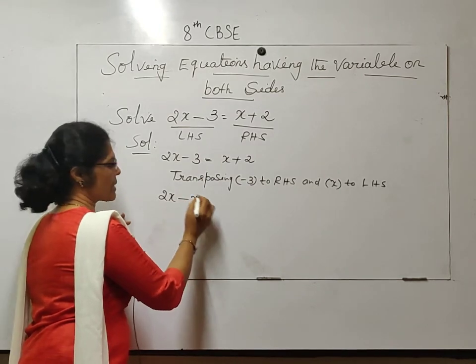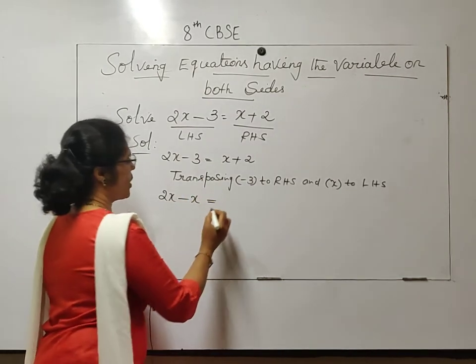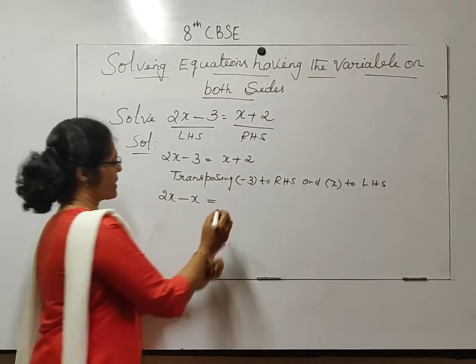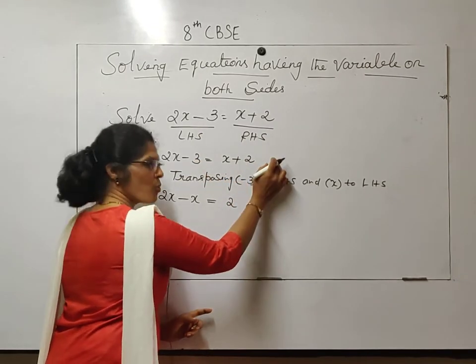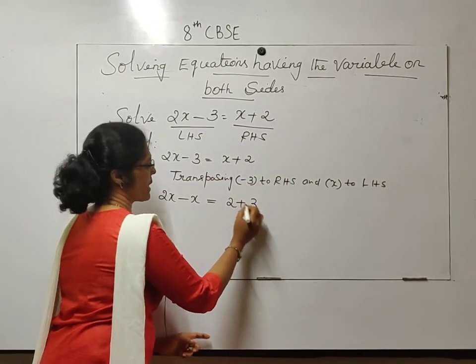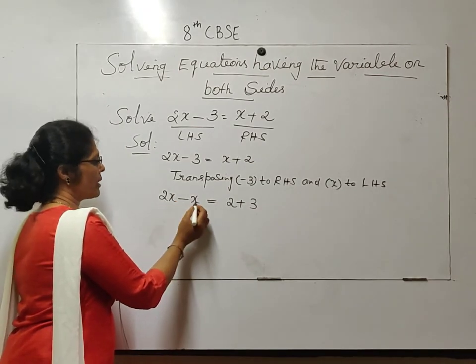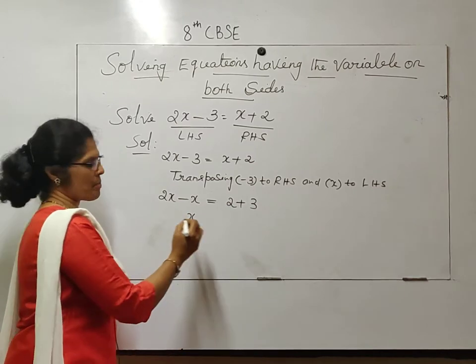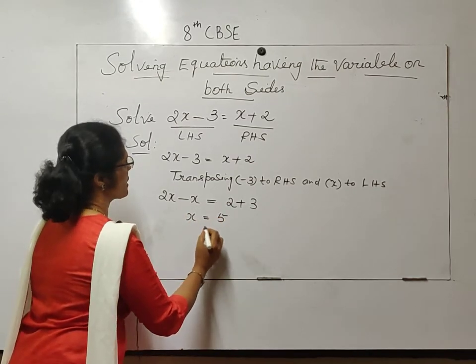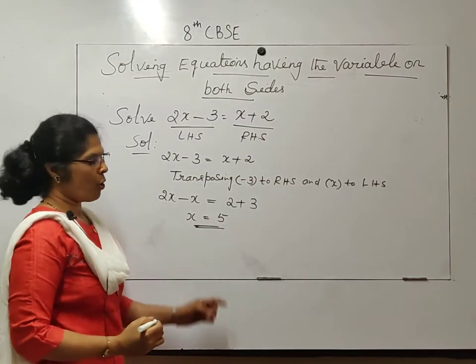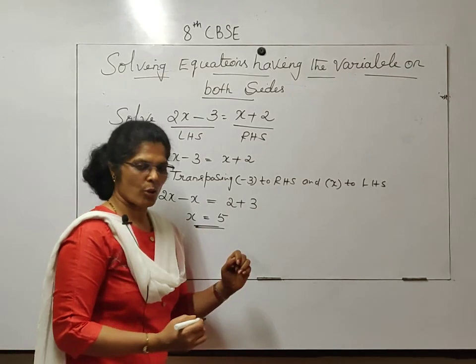Minus 3 goes to the next side, so plus 3. Here, 2x minus x. What comes? x comes. So 3 plus 2 is 5. Now I got x is equal to 5.